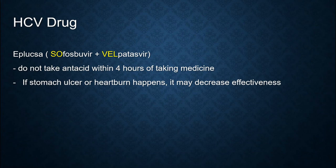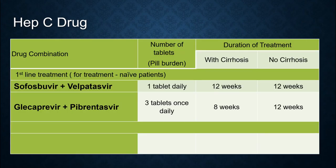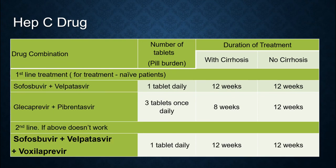When taking this drug, do not take antacid within 4 hours of taking the medicine. If there is a stomach ulcer or heartburn, it may decrease effectiveness. The first-line treatment is sofosbuvir plus velpatasvir for 12 weeks. Glecaprevir and pibrentasvir — for patients without cirrhosis, it is 12 weeks. The second-line is sofosbuvir, velpatasvir, and voxilaprevir — for both cirrhosis and non-cirrhosis, it is 12 weeks.